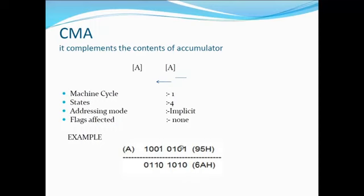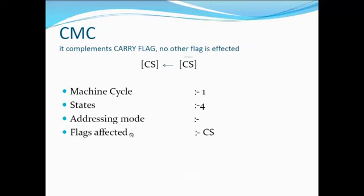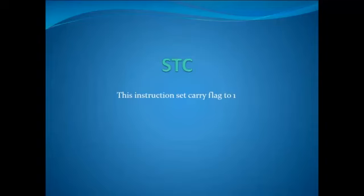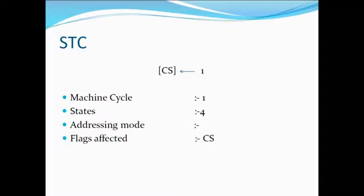This is the example of CMA. In CMC, we complement the carry flag and no other flag is affected. It has one machine cycle, four states, and only the carry flag is affected. In STC, the instruction sets the carry flag to one. It has one machine cycle, four states, and only the carry flag is affected.